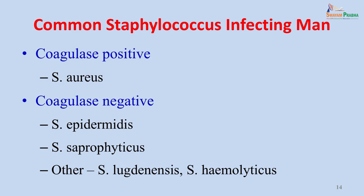The common staphylococci infecting man are divided into coagulase positive and coagulase negative. The major pyogenic pathogen is Staphylococcus aureus, which is coagulase positive. The coagulase-negative ones also cause infections and include Staphylococcus epidermidis, Staphylococcus saprophyticus, Staphylococcus lugdunensis and Staphylococcus haemolyticus.